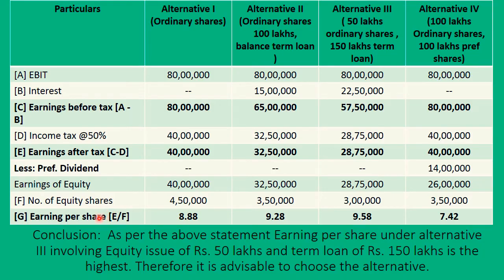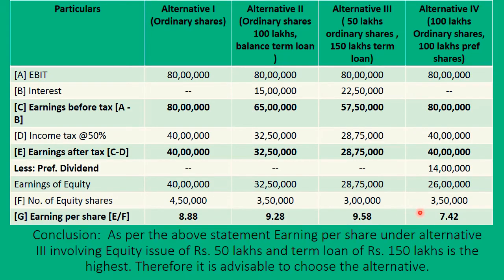To calculate EPS, divide the earnings available for equity shareholders by the number of equity shares. Under Alternative 1 it is 40 lakhs divided by 4,50,000 shares, giving EPS of 8.88. Alternative 2 gives EPS of 9.28. Under Alternative 3 with 50 lakhs equity and 150 lakhs loan, EPS is 9.58. And under Alternative 4 with 100 lakhs equity and 100 lakhs preference shares, EPS drops to 7.42.